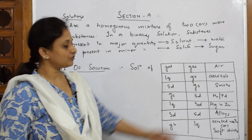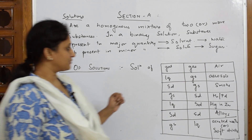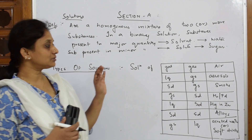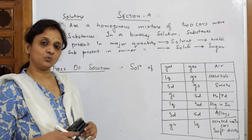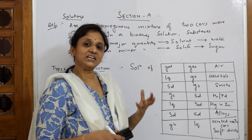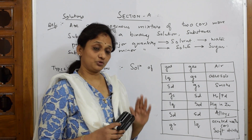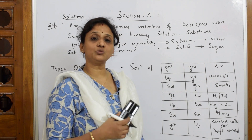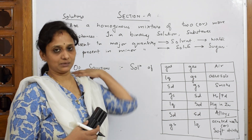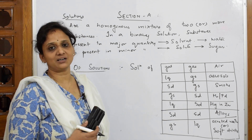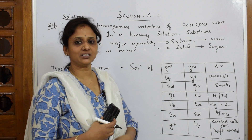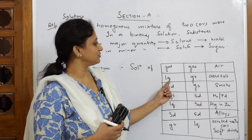Now I have a list of binary solutions. They may ask in the exam: smoke is a solution — what are the two ingredients? Or aerosol is composed of which two substances? So you need to memorize the table. Gas and gas gives air. Liquid and gas gives aerosol. Solid and gas gives smoke.